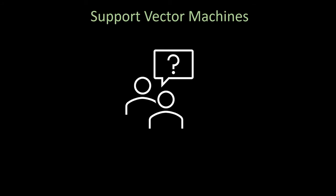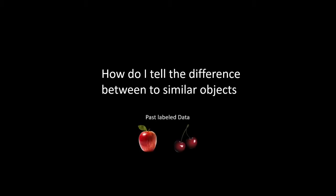Welcome back everyone. In this video, what we're going to talk about is support vector machines. This is really useful in certain situations where you can't really tell the difference between two objects, but you do have a dataset with past labeled data. For example, if you can't tell the difference between an apple and cherries, we can use a support vector machine to make a prediction one way or the other.